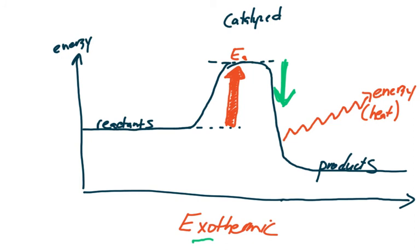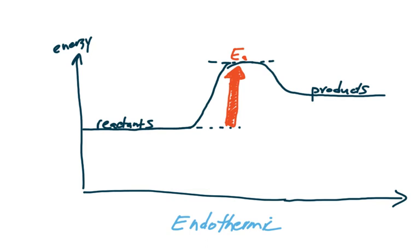What about an endothermic reaction? Well, for an endothermic reaction, we've got the same setup, but the energy state of our products is not lower than our reactants, but higher than where we started. The final state of our products is higher than where we started. That means that there was a net input of energy or heat into the reaction. A net.